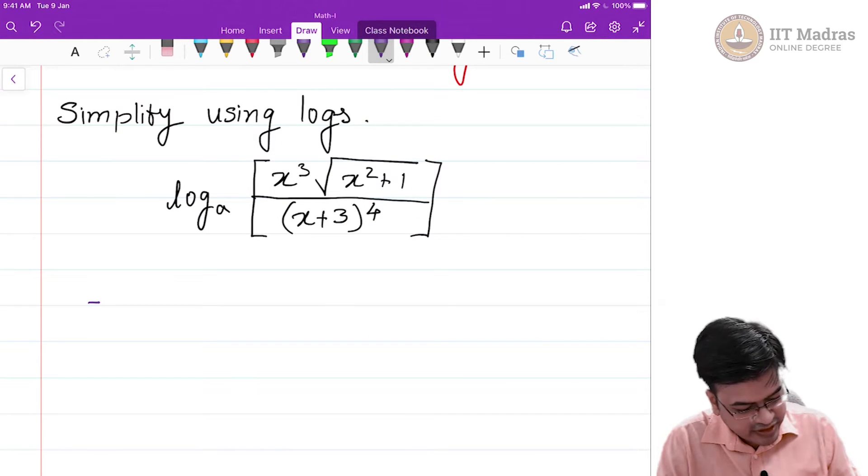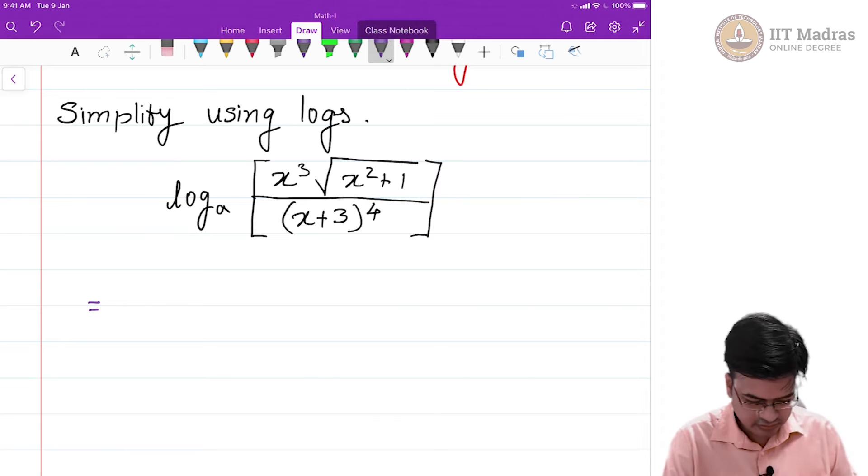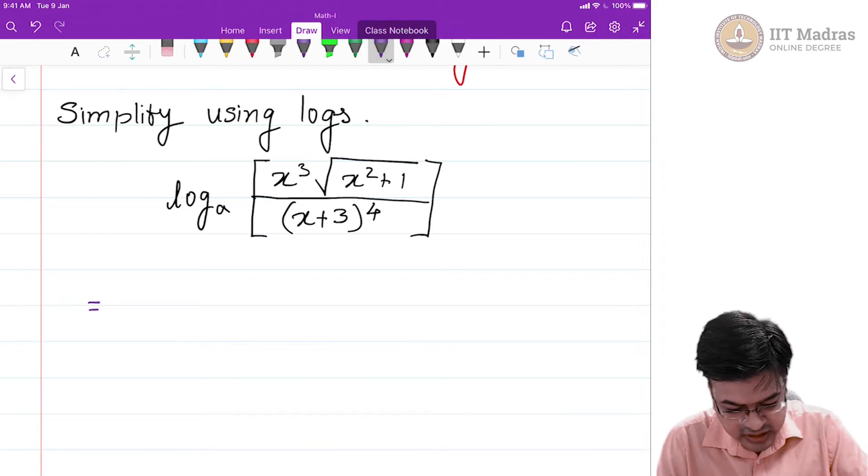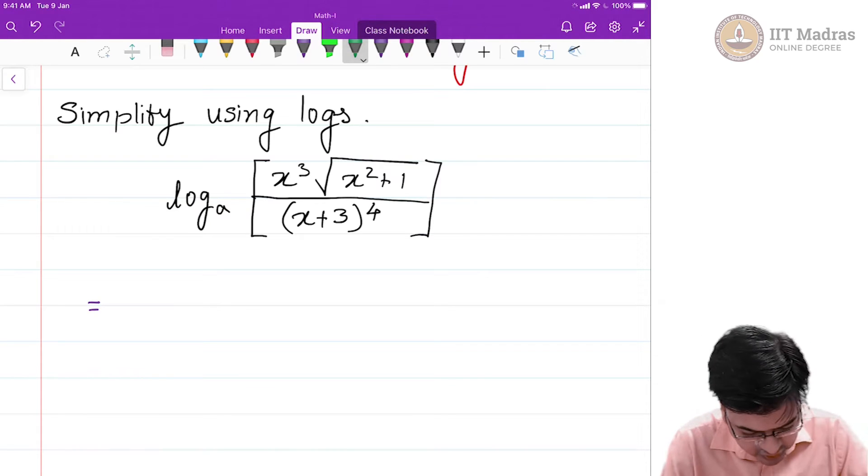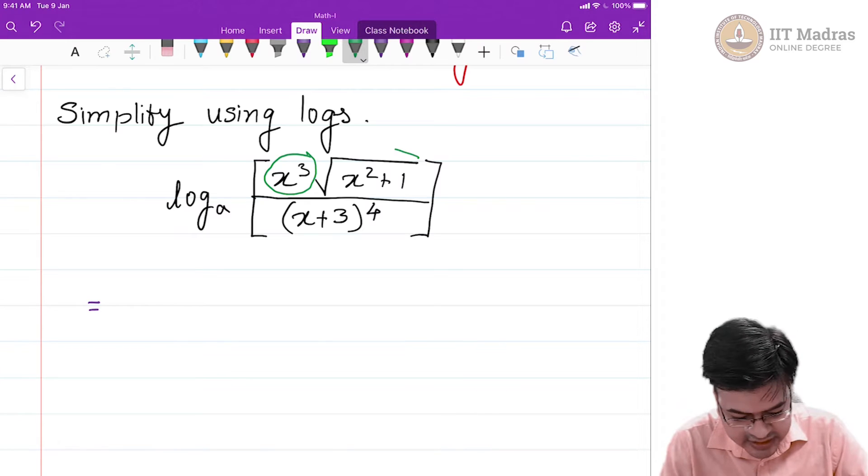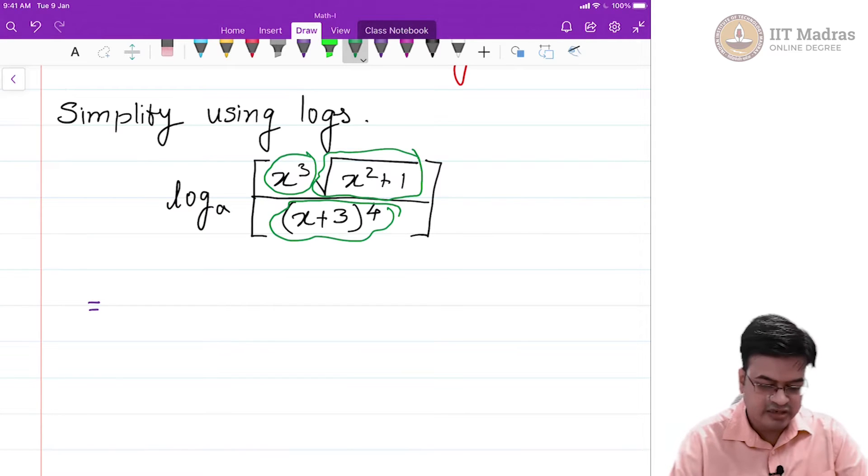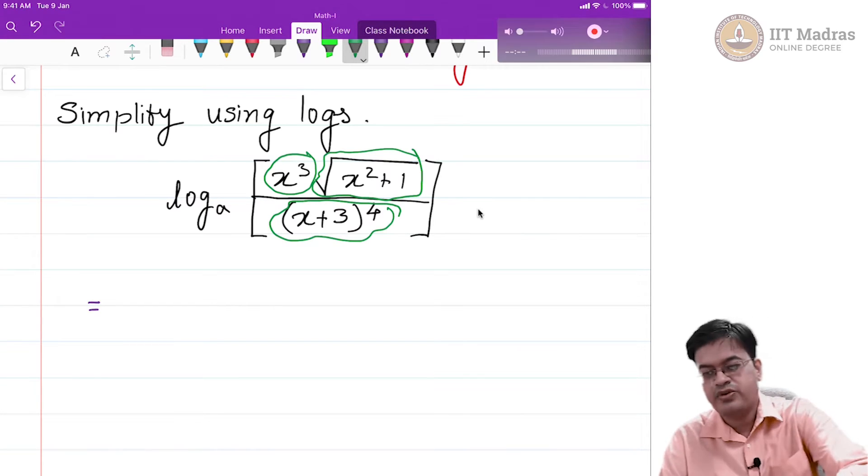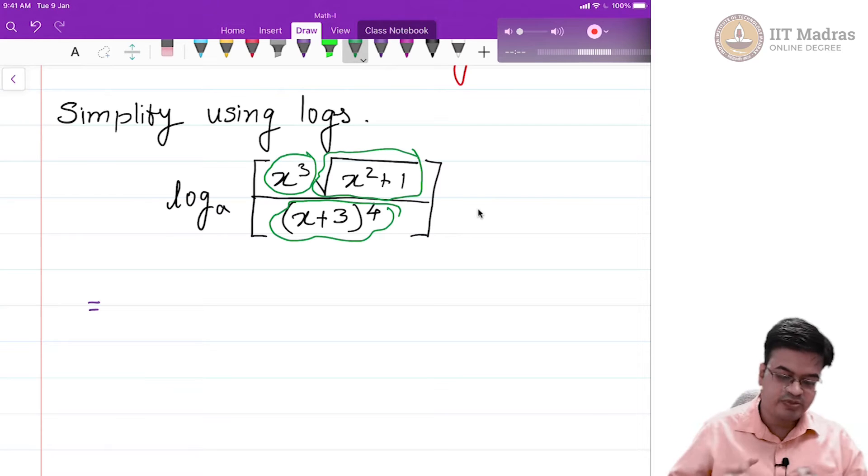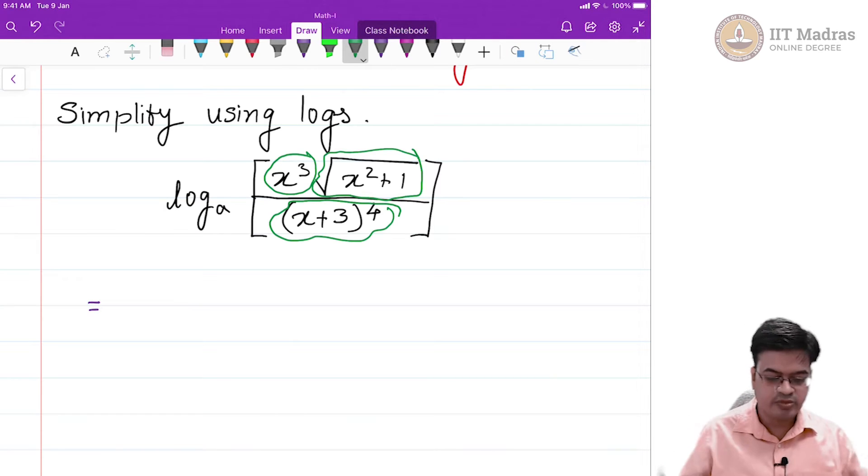This particular thing, let me write this to be equal to - so first you identify or isolate the terms that you identify can be separated. First term that I can separate out is this x cube, the second term that I can separate out is this square root and the third term is numerator. So essentially this particular term if you look at it can be split into 3 components.